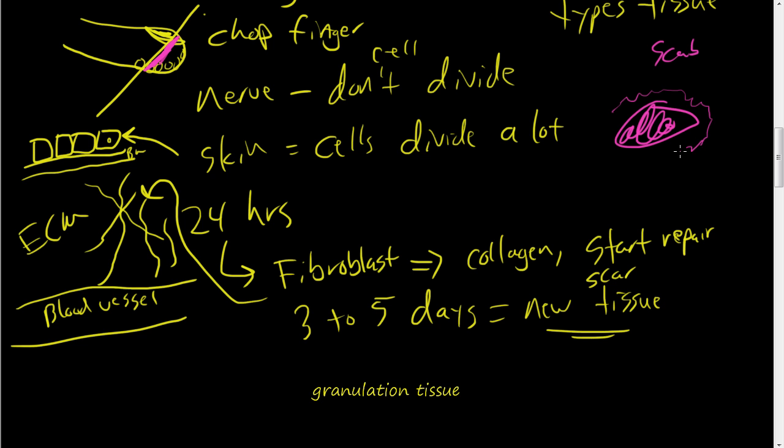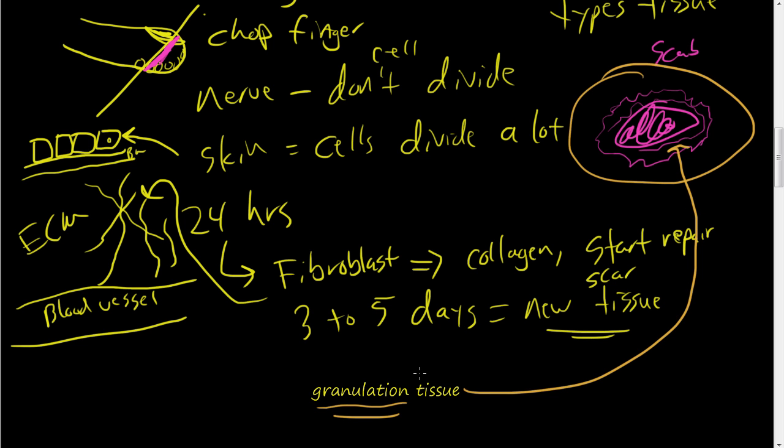When the scab starts to shrink in, you have this pinkish tissue here, and then your skin. But this pinkish tissue is called granulation tissue. And that appears three to five days after this new initial cut or wound.